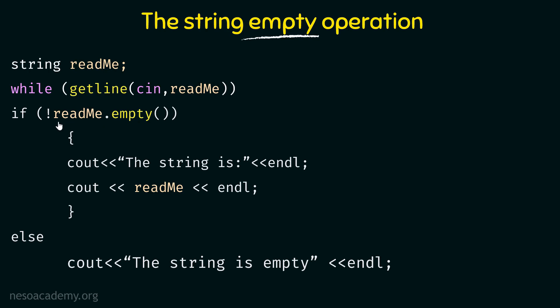We are saying not of readme.empty, which means it is the inverse of whatever is returned by the empty function. For example, if the string is not empty, the empty function returns 0, and not of 0 is 1, making the if condition true. Then it would print the string that was entered. The else condition would print 'the string is empty.' The else is reached when the string is actually empty — in that case the function returns 1, not of 1 is 0, so the if condition doesn't hold and the else executes.